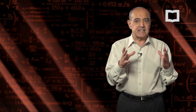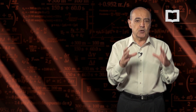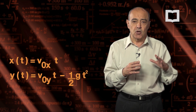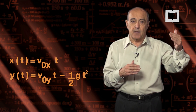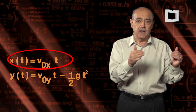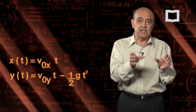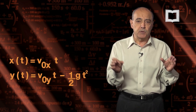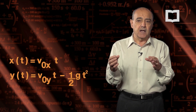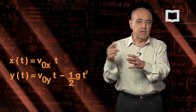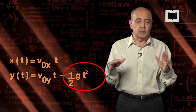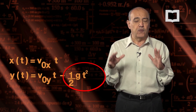Las ecuaciones que necesitamos son dos: una para la posición en X y otra para la posición en Y. La componente X de la posición es análoga a la del movimiento rectilíneo uniforme. La componente Y es más compleja: no solamente tiene la componente lineal, sino también una componente cuadrática porque corresponde a un movimiento con aceleración distinta de cero. La evolución de Y en función del tiempo incluye el término (1/2) g t² que hace que la trayectoria tenga forma de parábola.